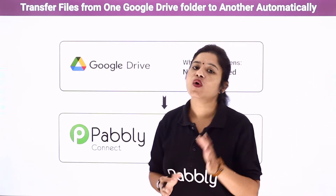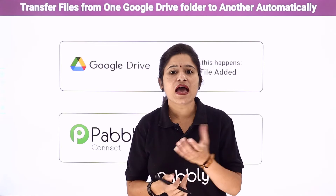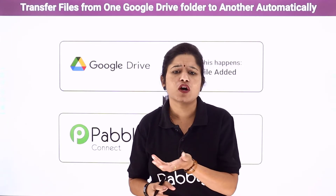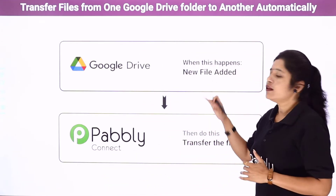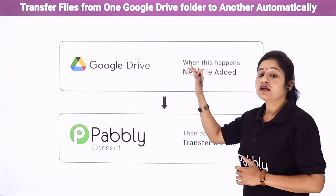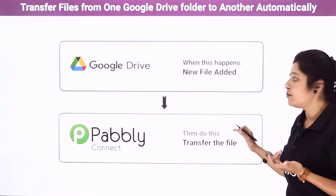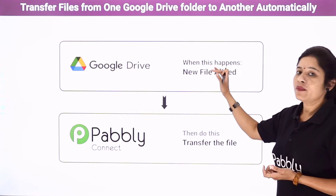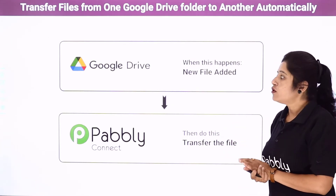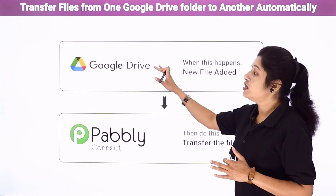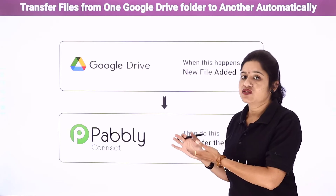Let's take an example that you are a business owner using an e-commerce platform to sell your various products digitally — herbal products, food products, cosmetic products and many other types. Whenever you upload an image or a new file into your Google Drive folder, the same file should be transferred to a specific folder. So if you upload a herbal product image, it should automatically get transferred to your herbal products folder, requiring a connection between Google Drive and different folders.